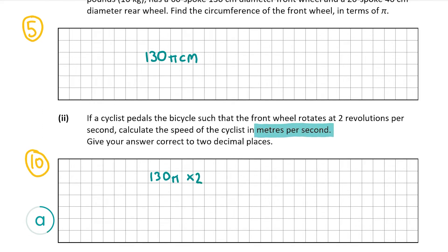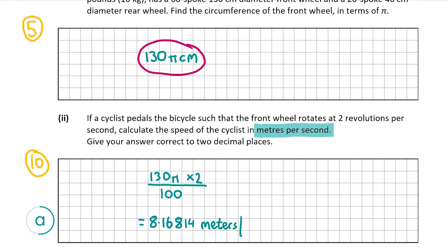We found it in centimeters, so to convert to meters we divide by 100. So 130π times 2, divided by 100, gives us 8.16814 meters per second, which to two decimal places is equal to 8.17 meters per second.